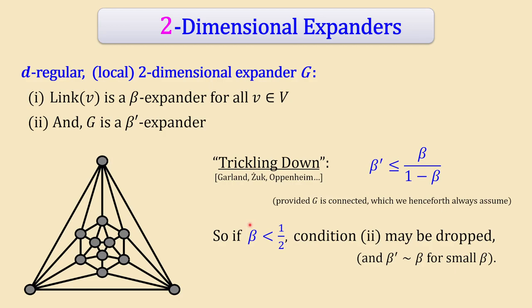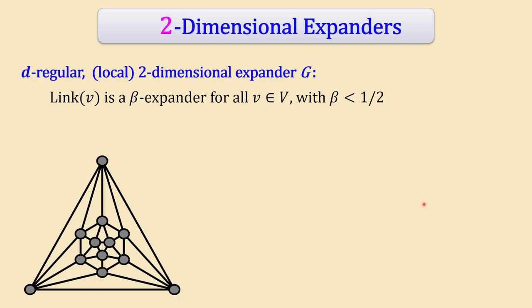As long as beta is less than 1/2 — a critical condition — the fraction beta/(1 - beta) is strictly less than 1, so beta' is also less than 1. In your head you can drop condition two as long as the beta parameter for all links is less than 1/2. Moreover, if you achieve a really good beta for all links, the corresponding beta' is also roughly beta when beta is small.